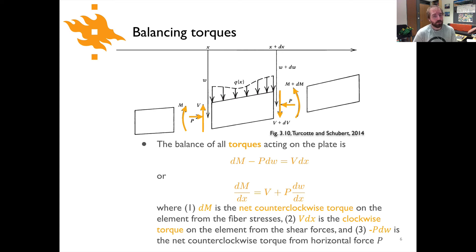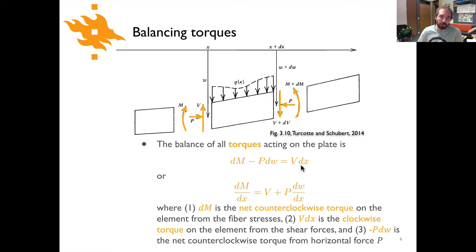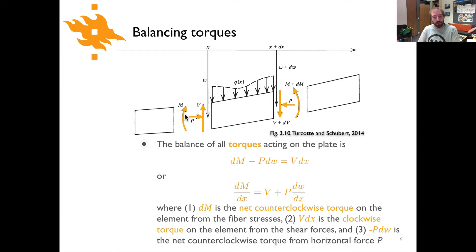To look at the torques, we consider three torques acting on the plate element. The torque balance is: dM − P·dW = V·dx. The term dM is the net counterclockwise torque on the element as a result of fiber stresses, related to the rigidity of the plate's bending. You can see torques M and M + dM at either end, giving a counterclockwise rotation. Meanwhile, V·dx represents a clockwise torque from the pair of shear forces V and V + dV.